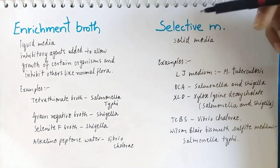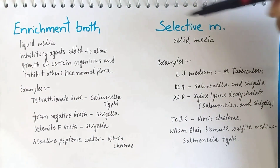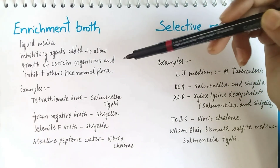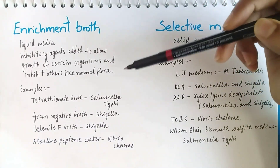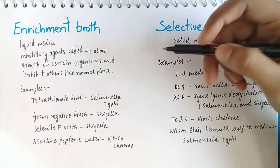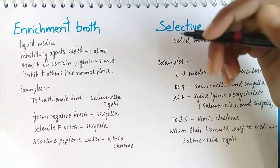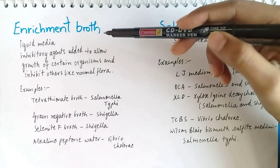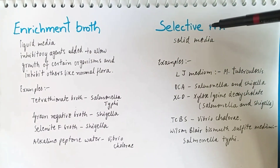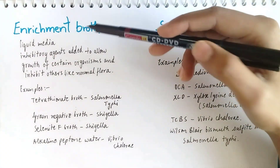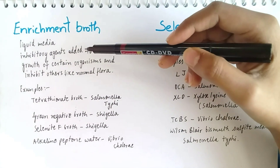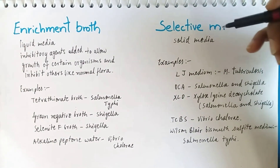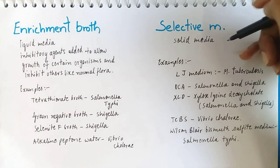Moving on to enrichment broth and selective media — in both, inhibitory agents are added to allow growth of certain organisms and inhibit others like normal flora. The inhibitory agents added include antibiotics like vancomycin and nystatin. The only difference between enrichment broth and selective media is in state: enrichment media uses liquid media, whereas selective media uses solid media by adding agar.